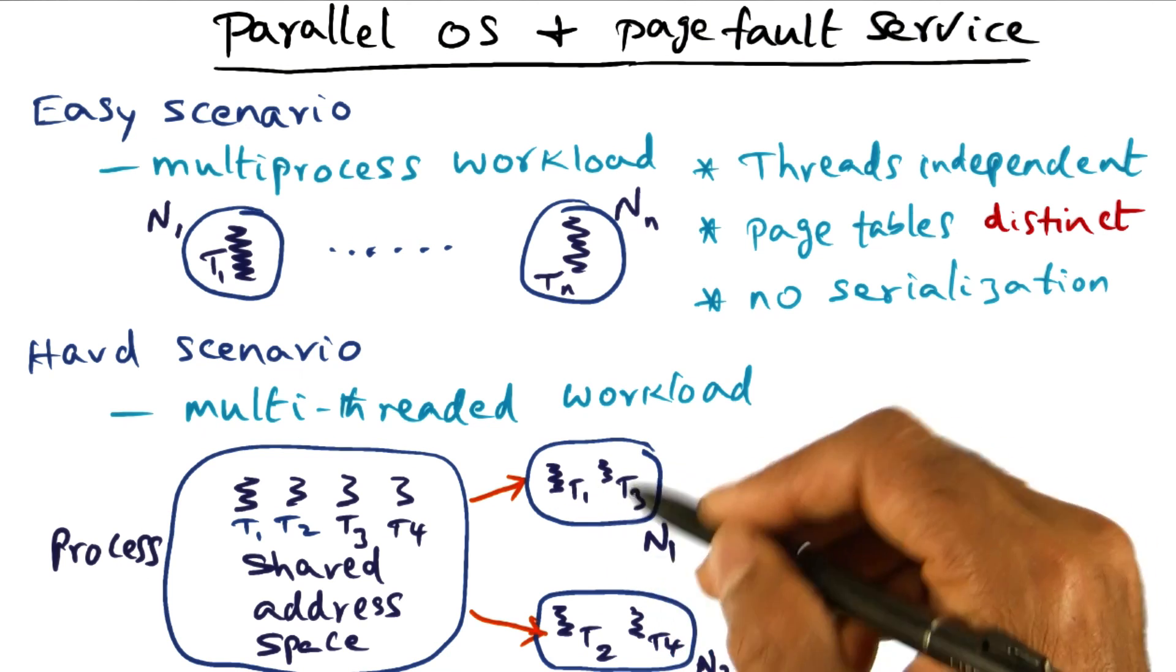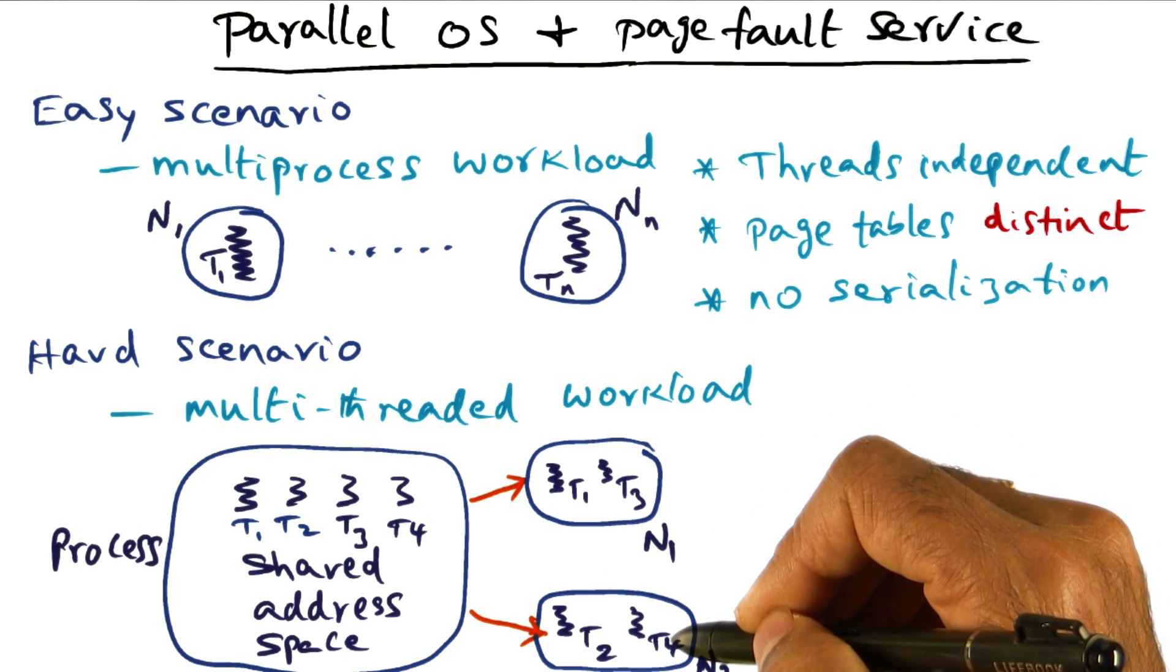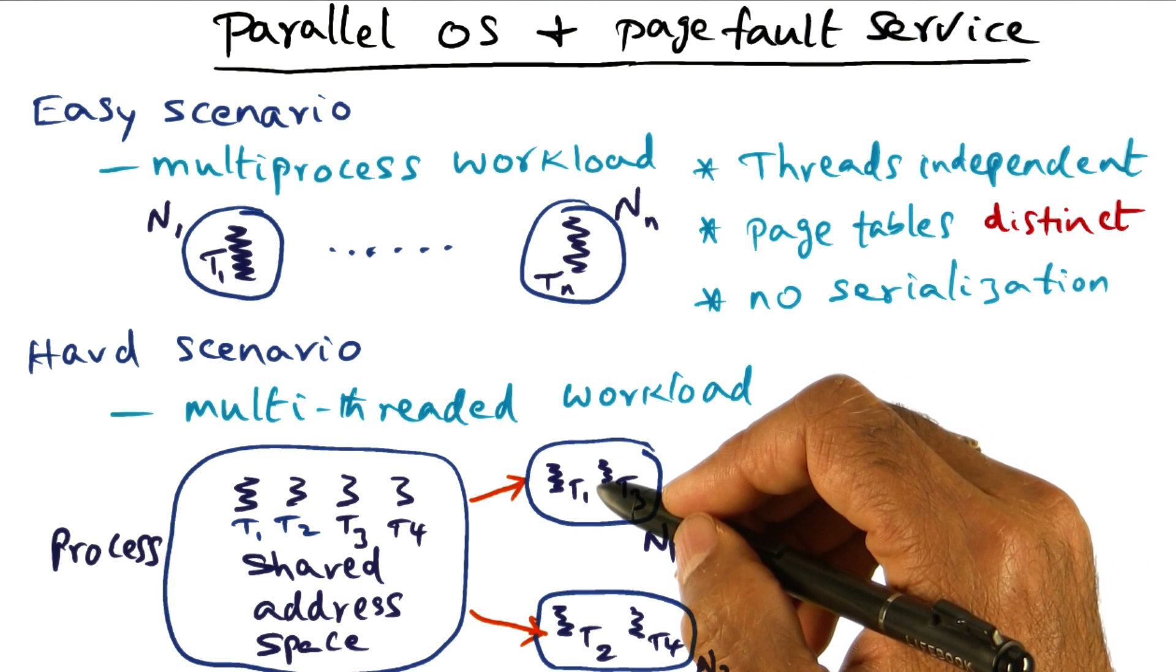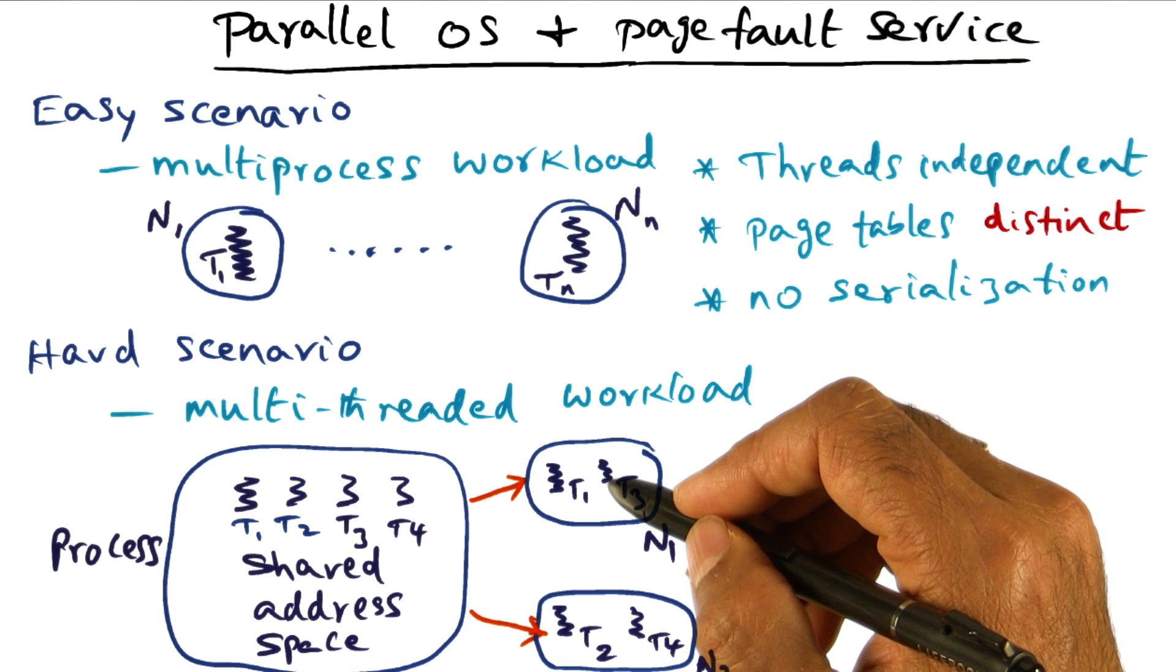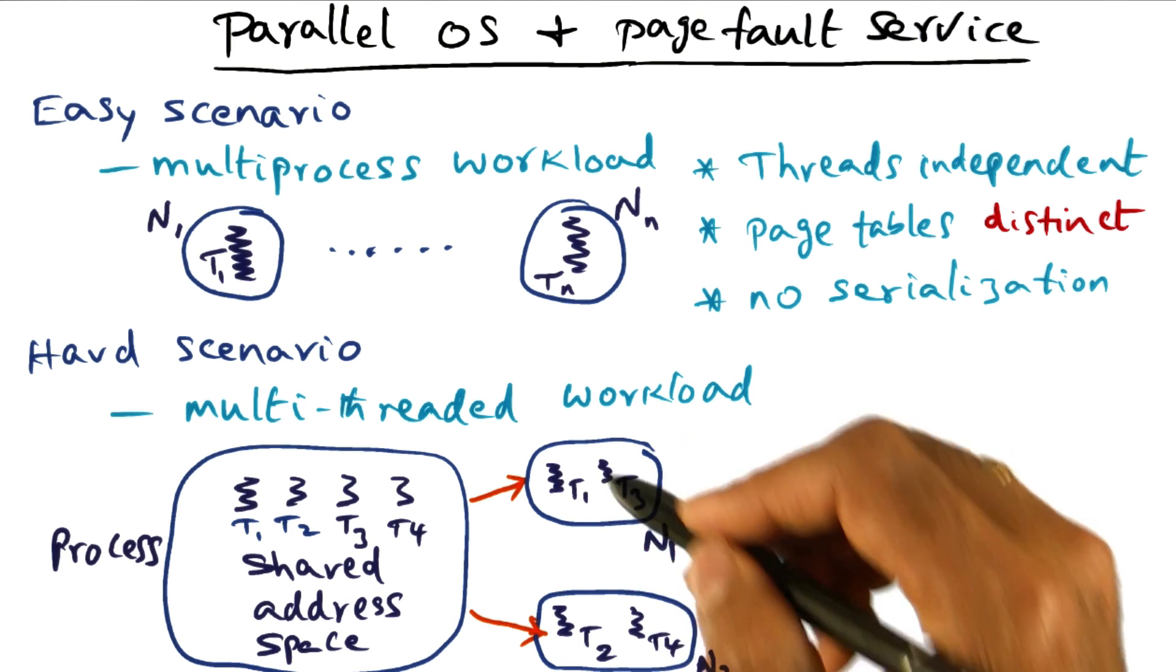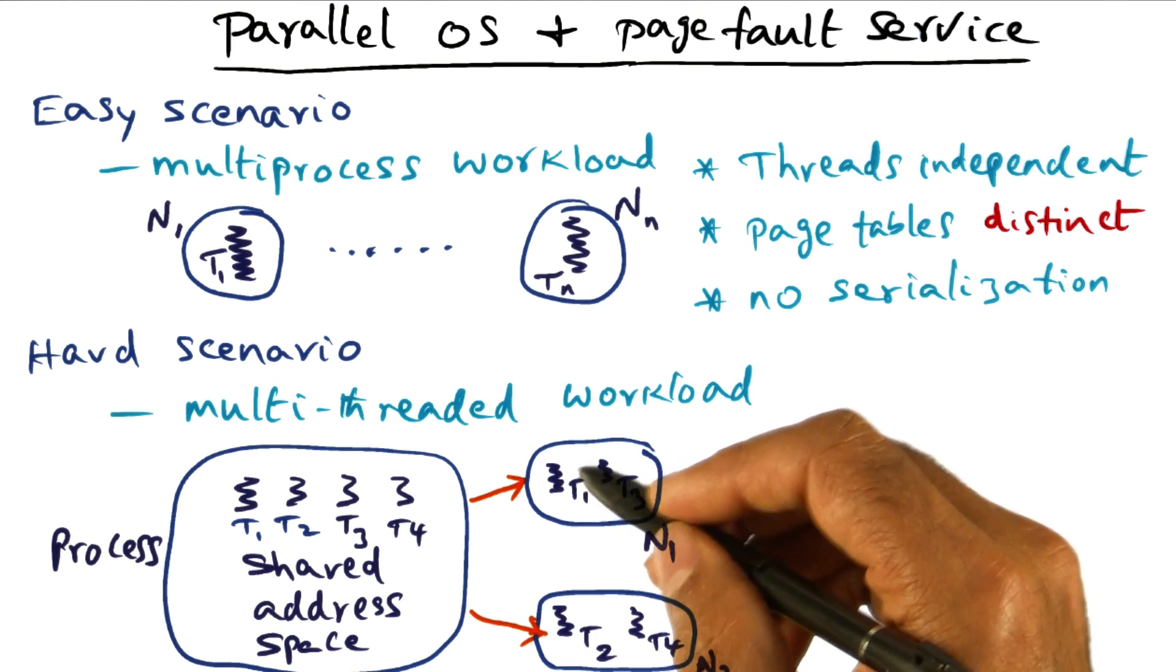In principle, all of these threads can work in parallel, and if they incur a page fault, it is incumbent on the operating system to ensure that there is no serialization of the work that needs to be done to service the page faults.